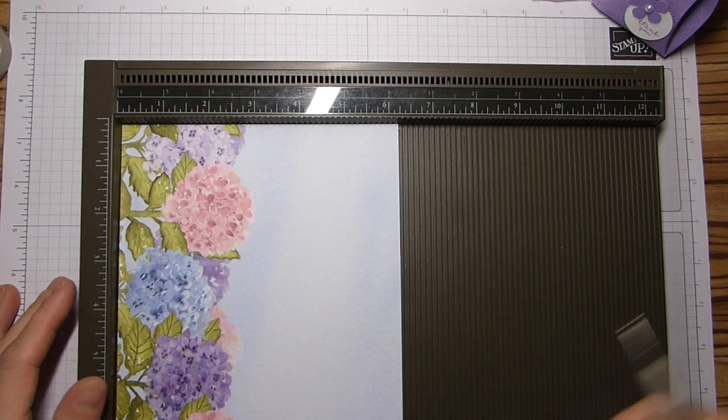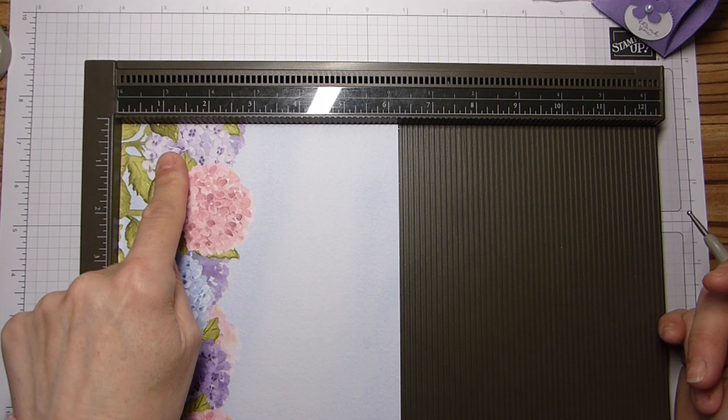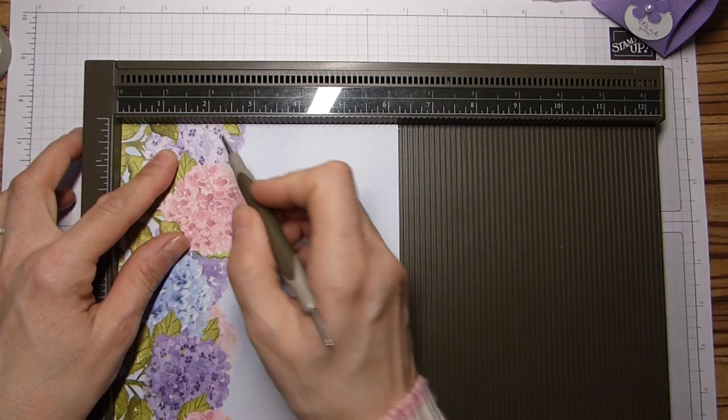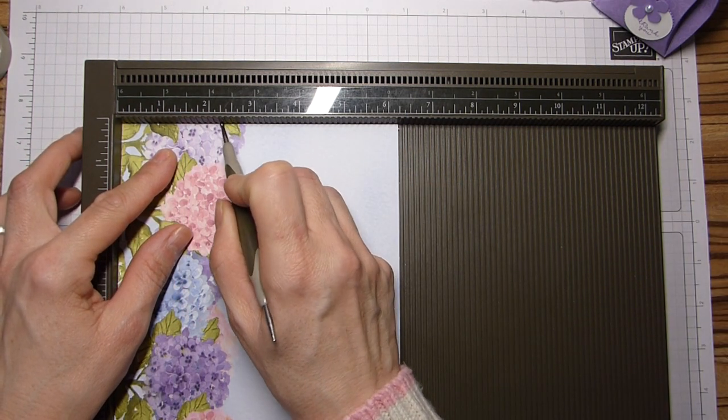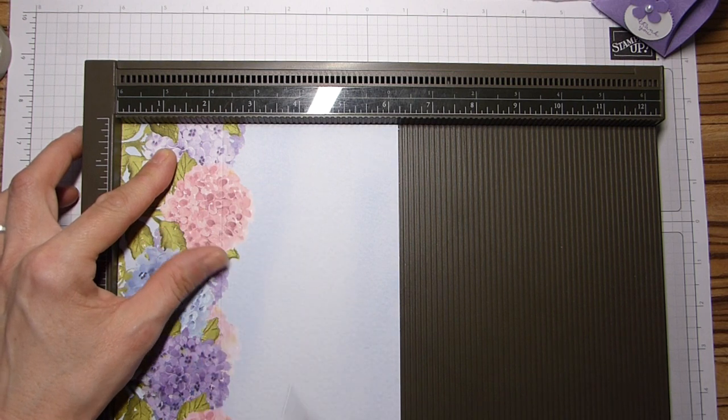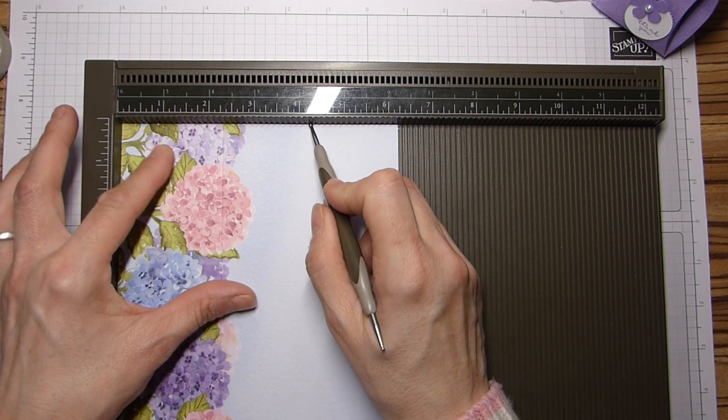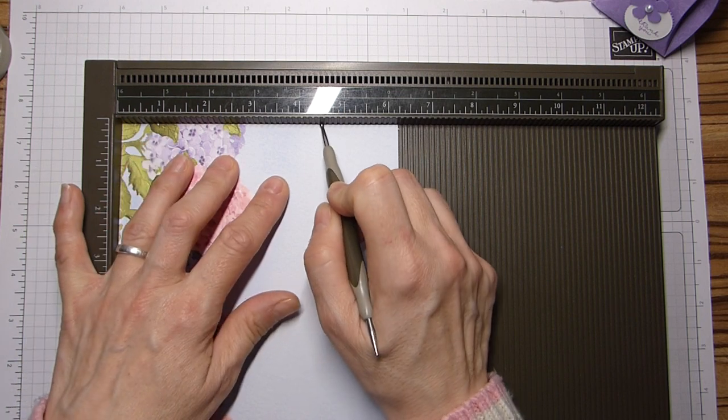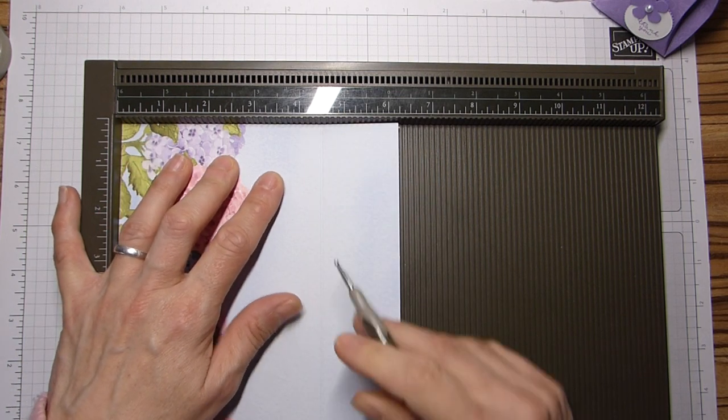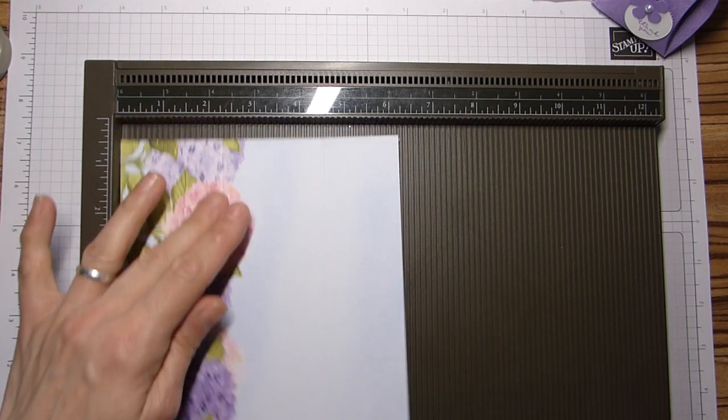You want to score the short side, this being the bottom, at two and a quarter and four and a half, which is six and 12 centimeters.